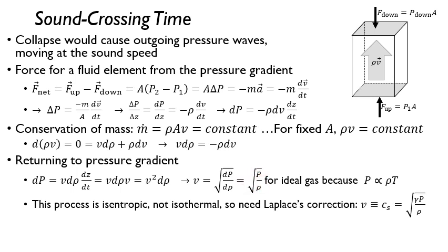Now that is the solution that Newton had. Later on, Laplace realized that the problem here is that this process, this perturbation process, is not isothermal - the temperature can change. It's isentropic. So it turns out you need to add this correction from Laplace. You multiply the pressure times the adiabatic constant, gamma. So our sound speed is the square root of the adiabatic constant times the pressure divided by the density.